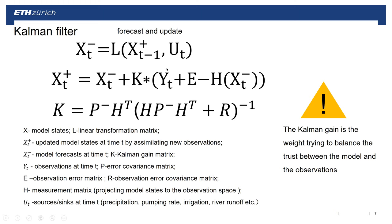When the measurement error equals zero, that means we trust the observations completely — there is no error in the observation data. So the Kalman gain should equal the inverse matrix of H, which is larger. Normally, the correction magnitude is a number between zero and K multiplied by the inverse matrix of H.